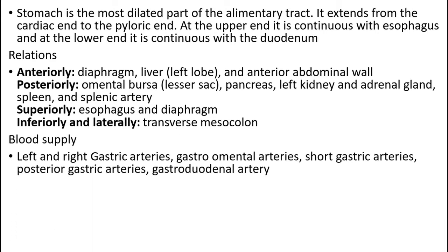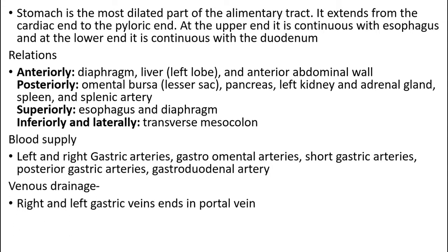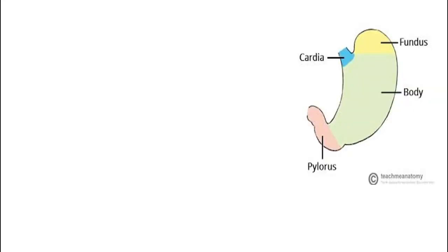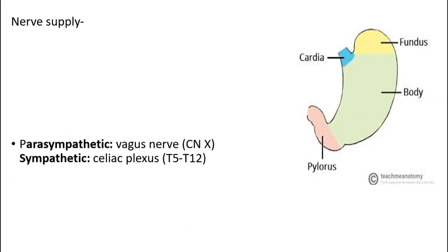The blood supply to the stomach is by the left and right gastric arteries, gastroepiploic arteries, short gastric arteries, posterior gastric arteries, and gastroduodenal arteries. The venous drainage is by the right and left gastric veins which end in the portal vein.